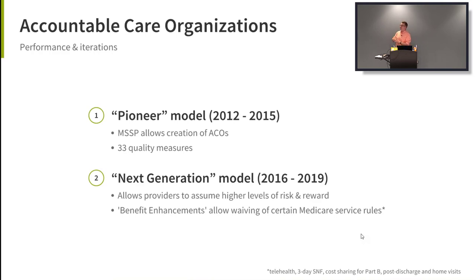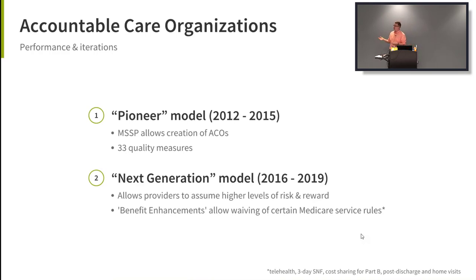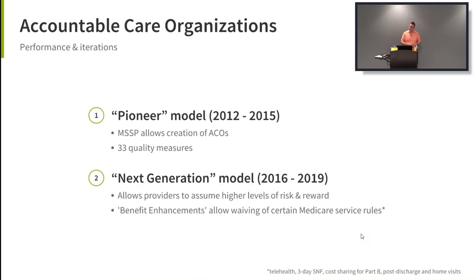The Next Generation model also allowed ACOs to waive certain requirements that regular Medicare providers had to follow. Medicare guarantees certain services and quality thresholds, but ACO members can do things a little differently — they have more flexibility. CMS recognized that if we're moving from an acute-care response model to a preventative, proactive model, organizations need flexibility. So: higher risk and reward, but also more freedom.